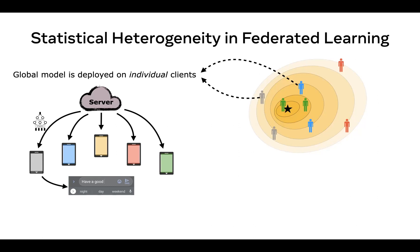Because of statistical heterogeneity, the distribution on any one client can be quite different from the average distribution across all the clients. As a result, we have a train test mismatch. The distribution that the model is trained on, which is the average distribution across all clients, is different from the distribution that the model is tested on, which is the distribution on a particular client at a time.